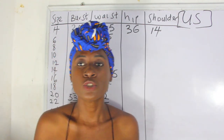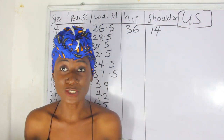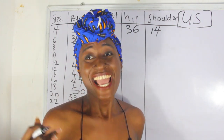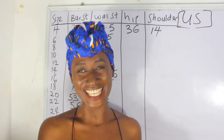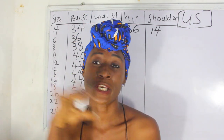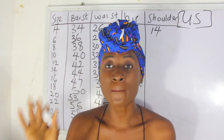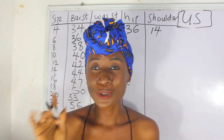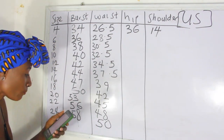Now we have our hip measurements. For most women the hip measurement is usually the largest part, because you know we have backsides. For some women the bust is the largest part of the body — whichever one you fall into, you are beautiful.